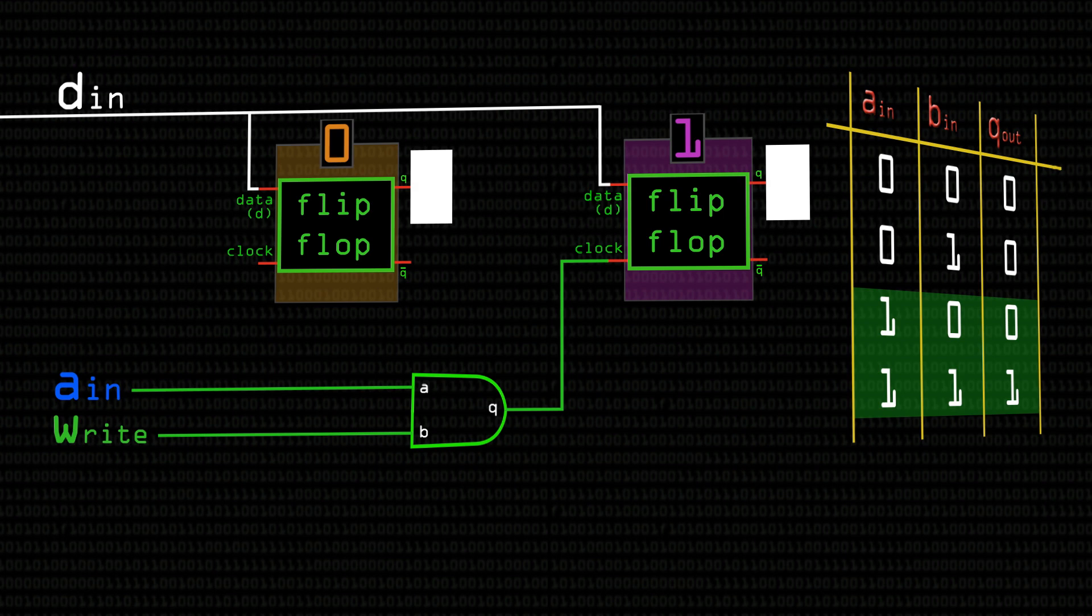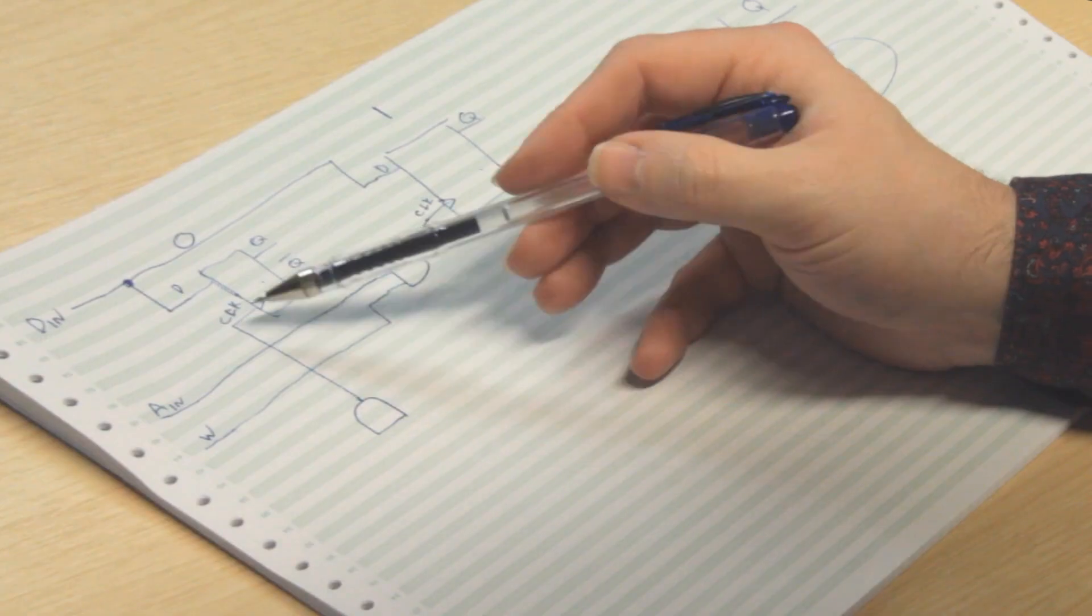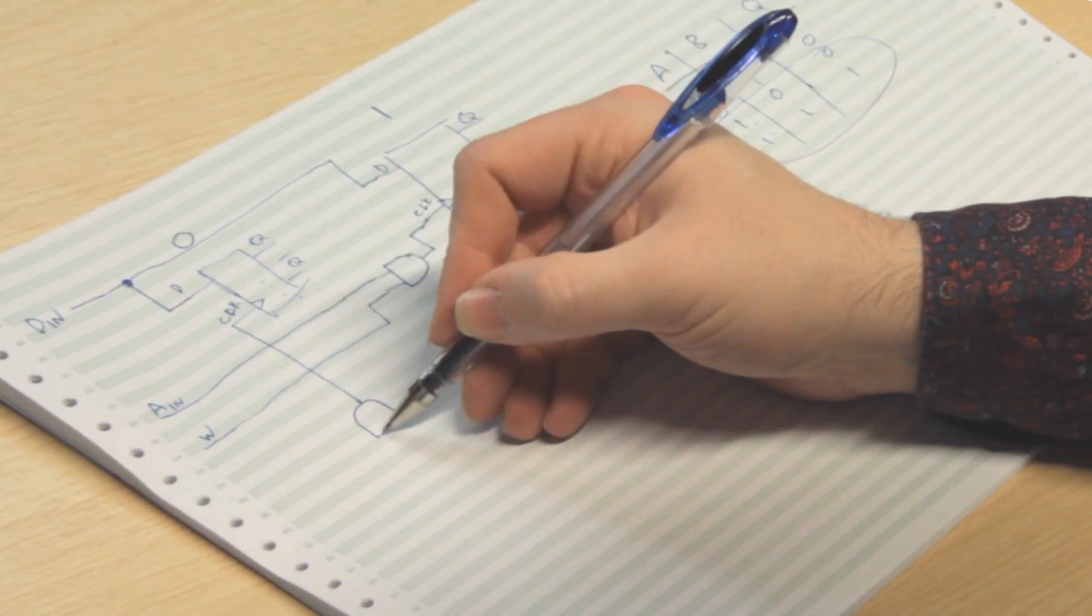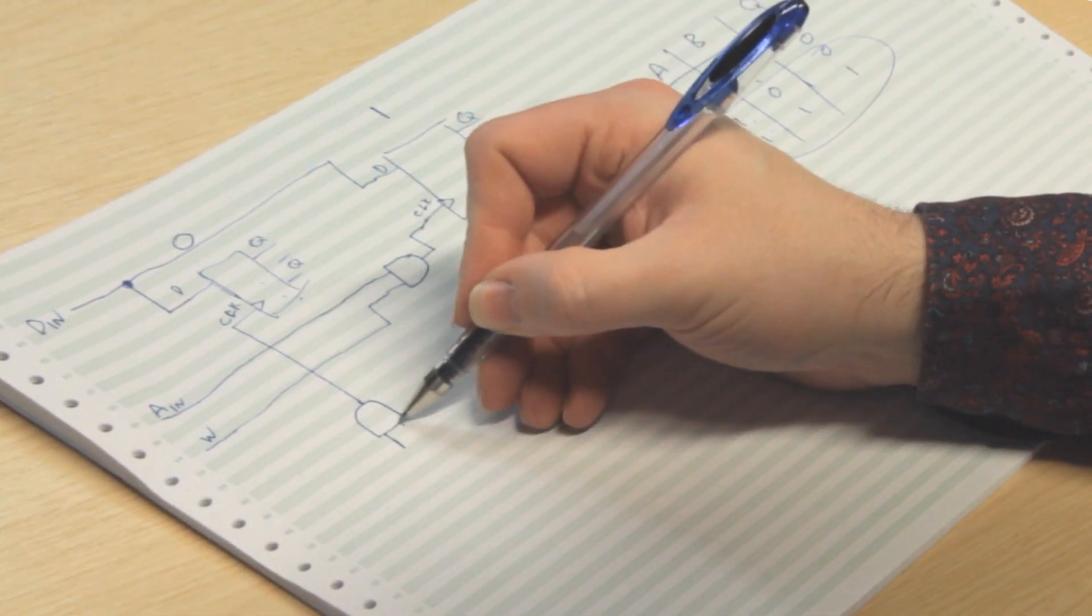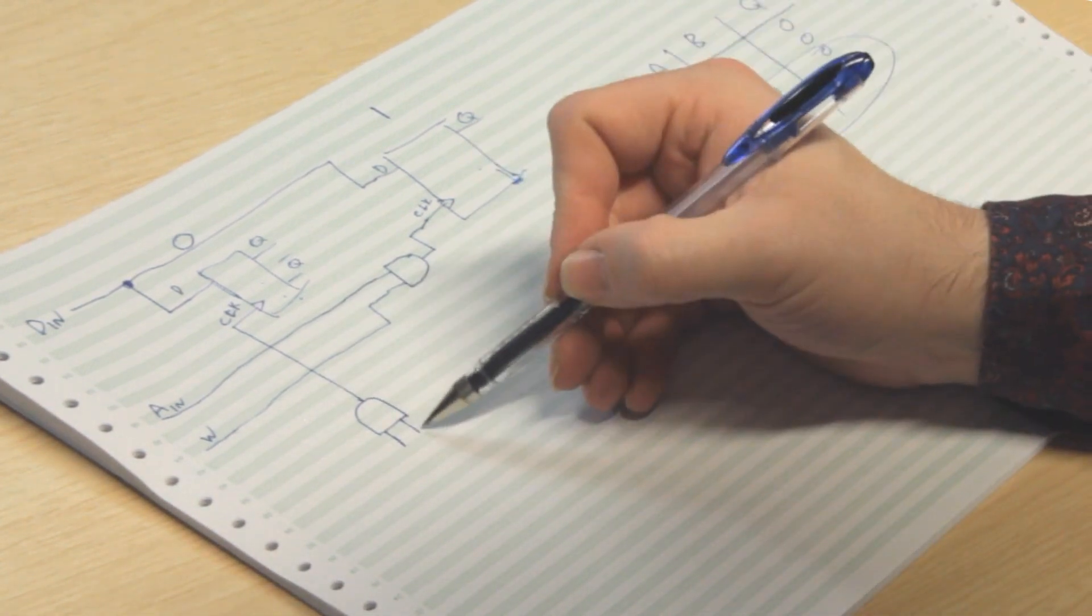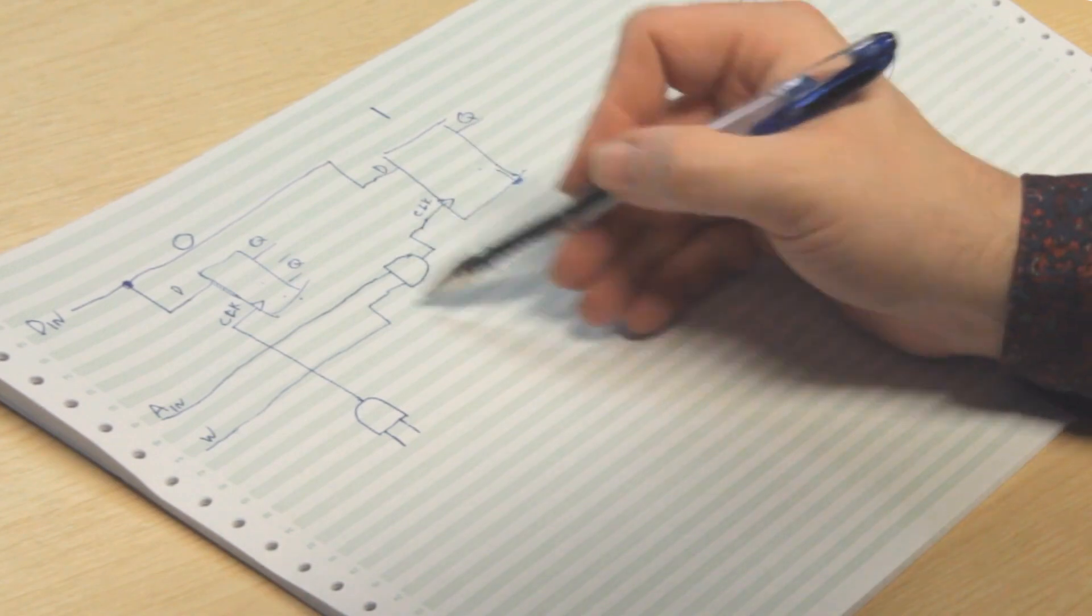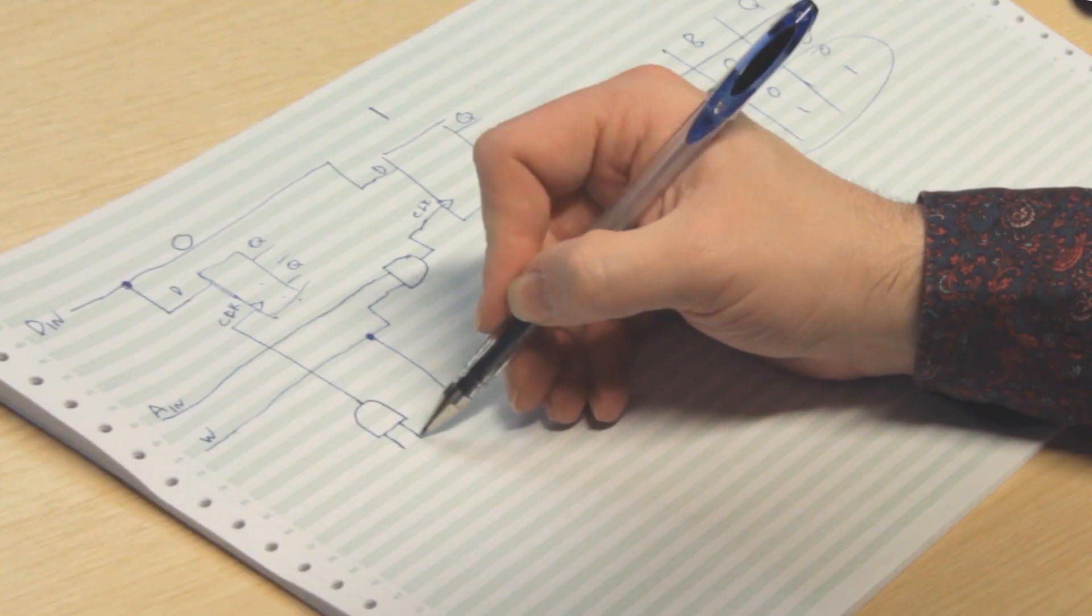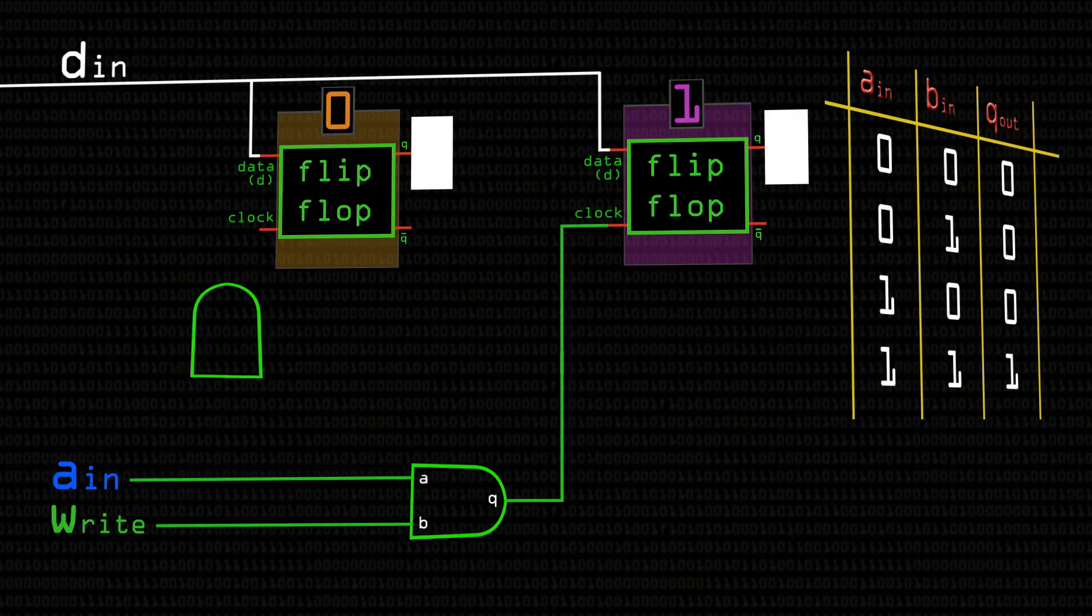Now, how do we do the same for flip-flop zero? Well, we want the same thing to happen, so I should bring my wires down here. So what we need to do now is work out what are going to be the right inputs for A and B on this AND gate. Now the input for B is easy, because it's exactly the same as this one here. The W signal, the write signal, the same way we want to write it. We just bring this down and connect it up.